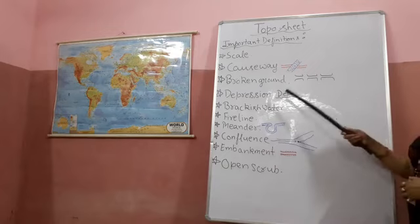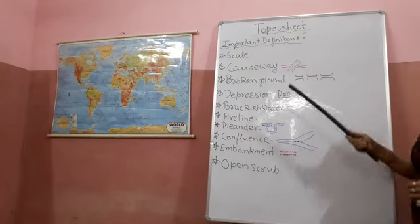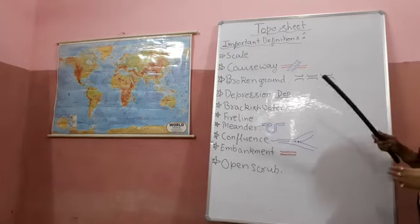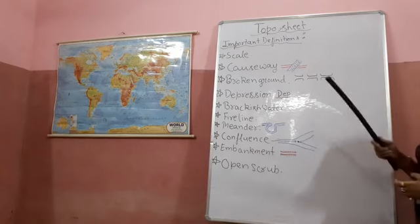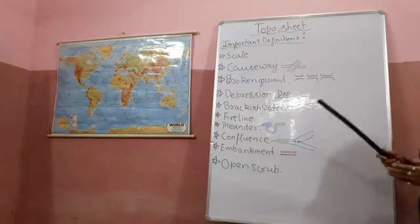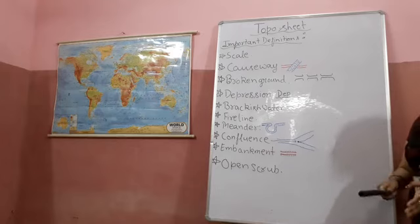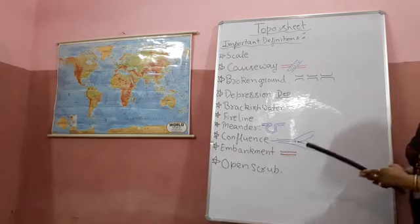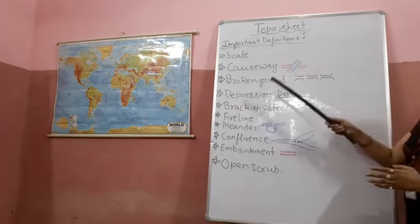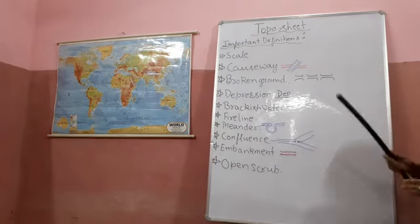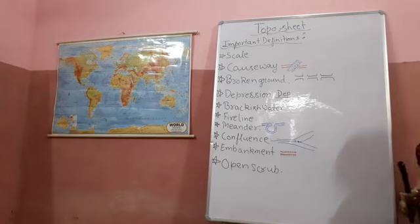Now next is depression. In sandy areas, depressions are very often found when the sand is blown away by the wind. As we know, in desert areas strong winds blow, removing sand from one place and accumulating it on the other side. One side forms sand dunes, and the other side forms a depression. The symbol for depression is written as 'Dep'.